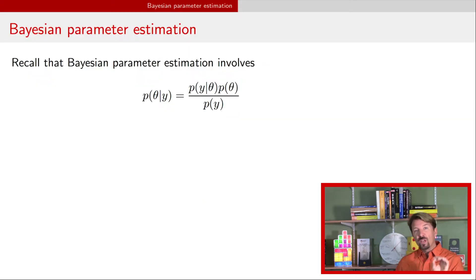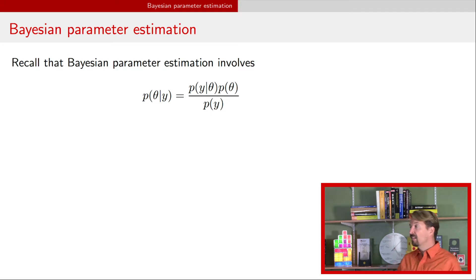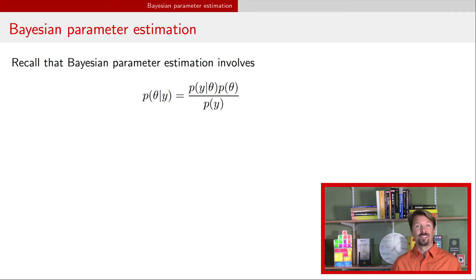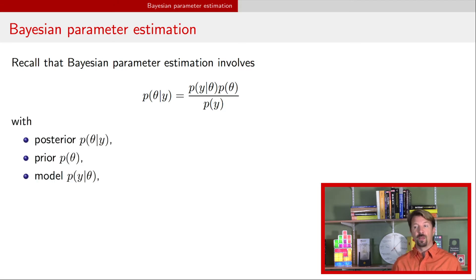As a quick reminder about how Bayesians do parameter estimation: Bayesians use Bayes' rule. In this Bayes' rule formula, theta represents the unknown parameters and y is the data. With this formula, we've given each of these terms a name.